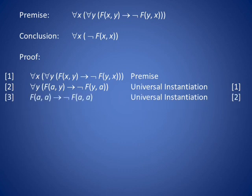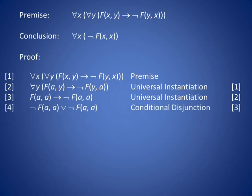On line 3, we universally instantiate Y to the same arbitrary A to result in F of A and A implies not F of A and A. If we apply a conditional disjunction to line 3, the implication is replaced by the disjunction not F of A and A or not F of A and A.